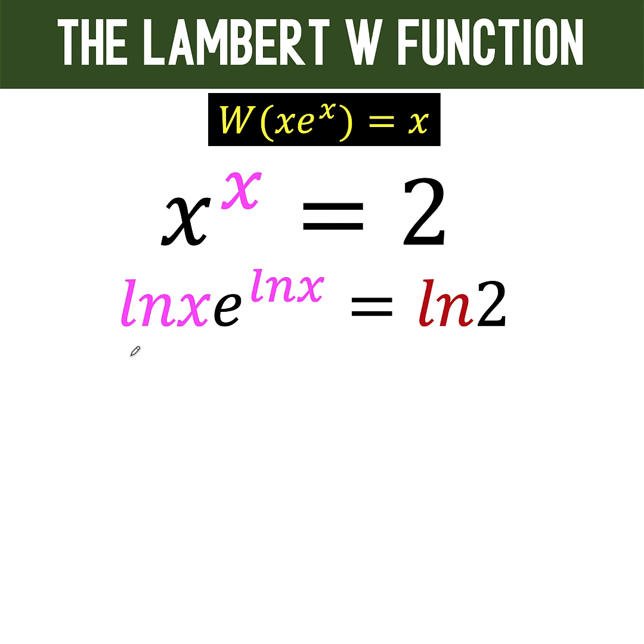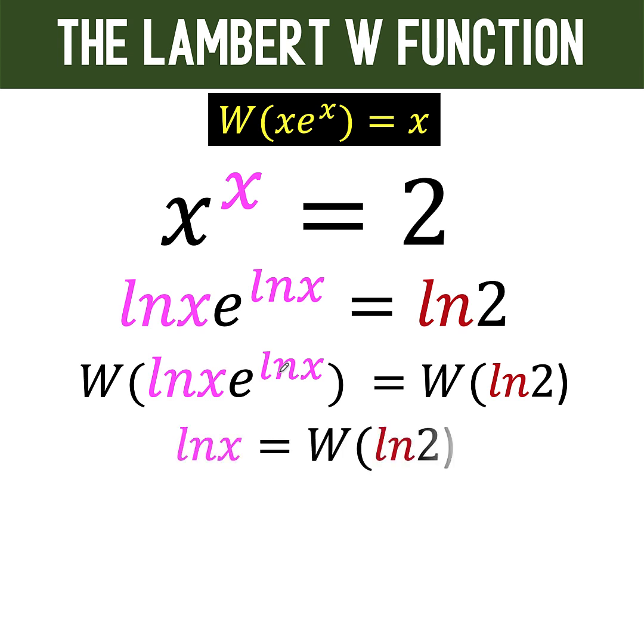And so applying now the Lambert W function to both sides of this equation, we now have the Lambert W of the left side equals the Lambert W of the right side. And the left side is this form, which is equal to this exponent ln x. And we copy the right side.